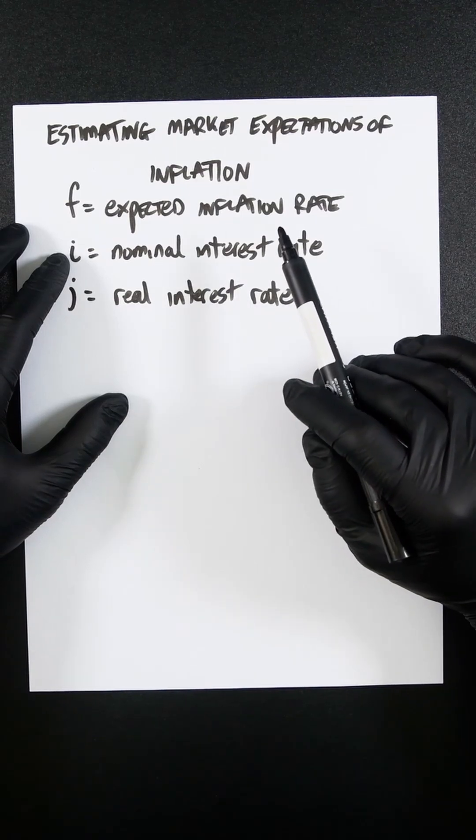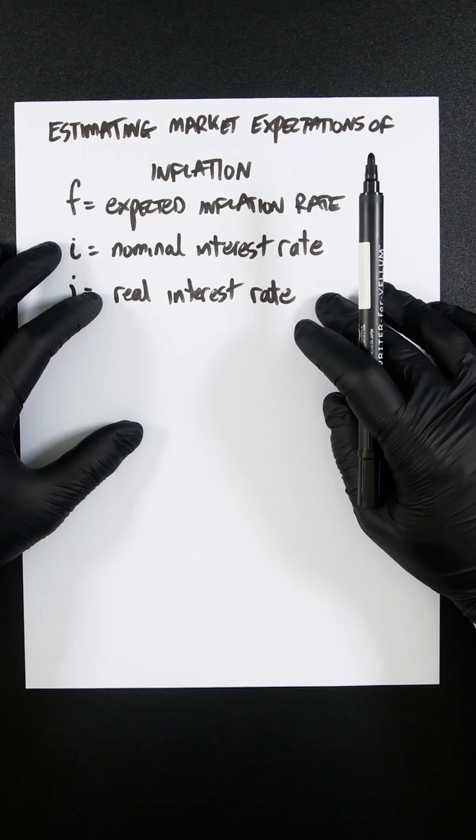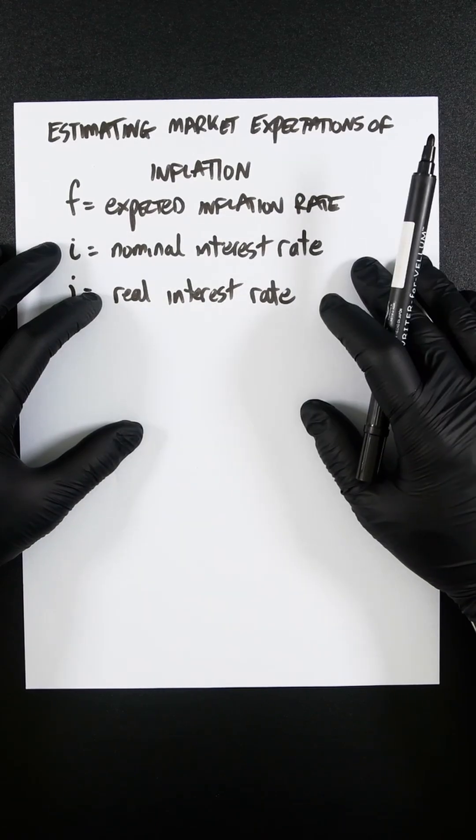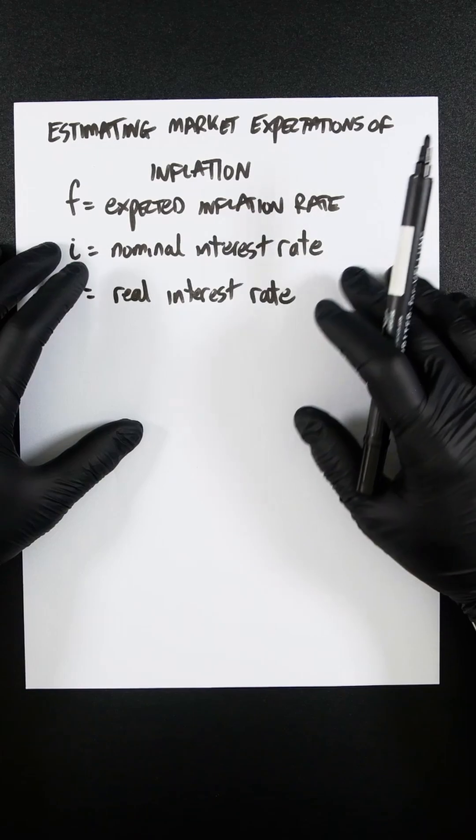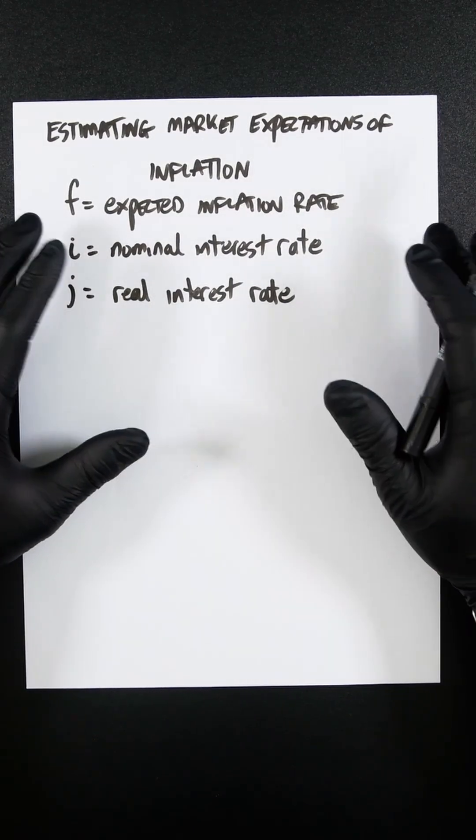So we've got the nominal interest rate, which is typically formed from government bonds, and the real interest rate, which is derived from inflation index securities, like index-linked guilds. In the UK, at least, index-linked guilds are linked to RPI, which is not UK's target inflation measure, that's CPI.